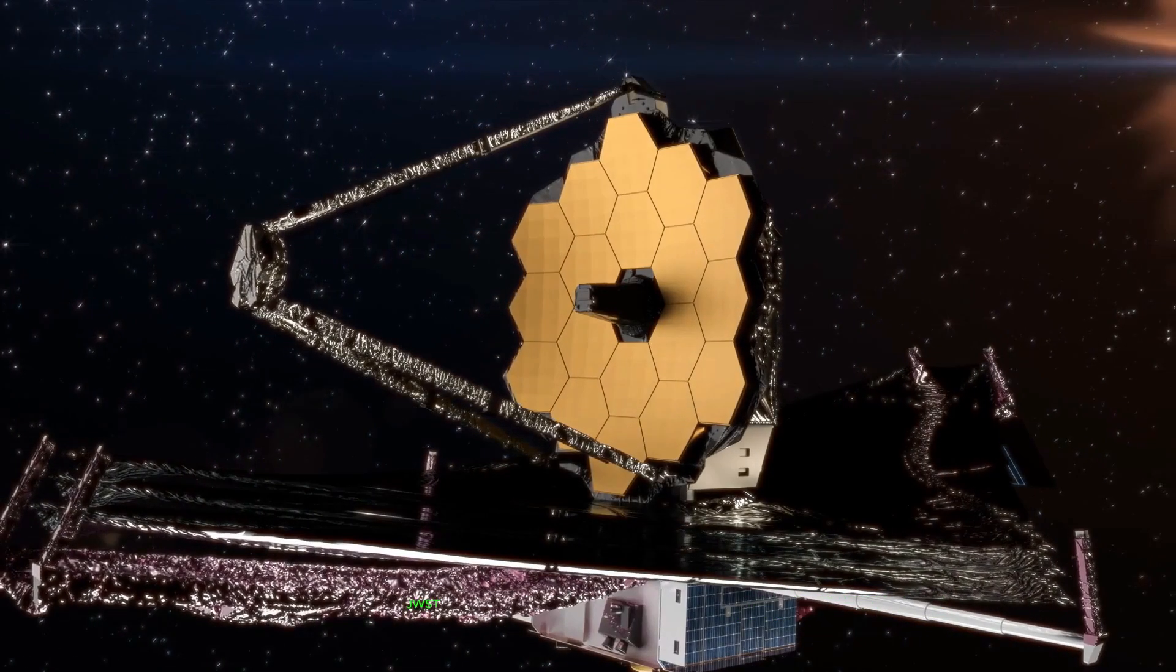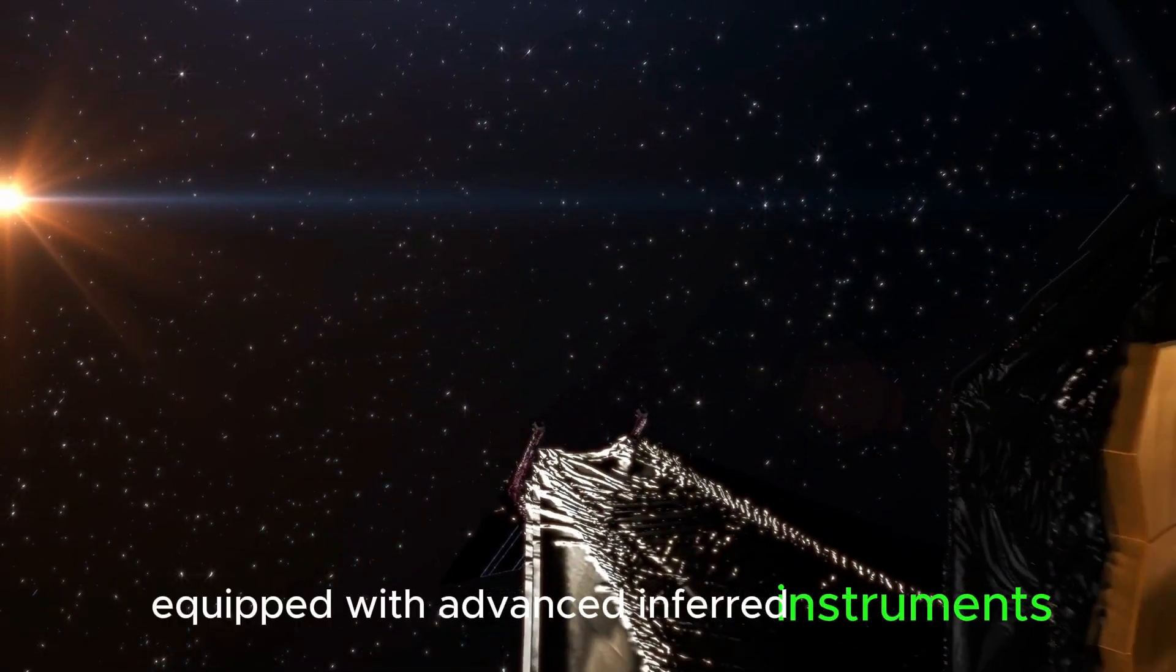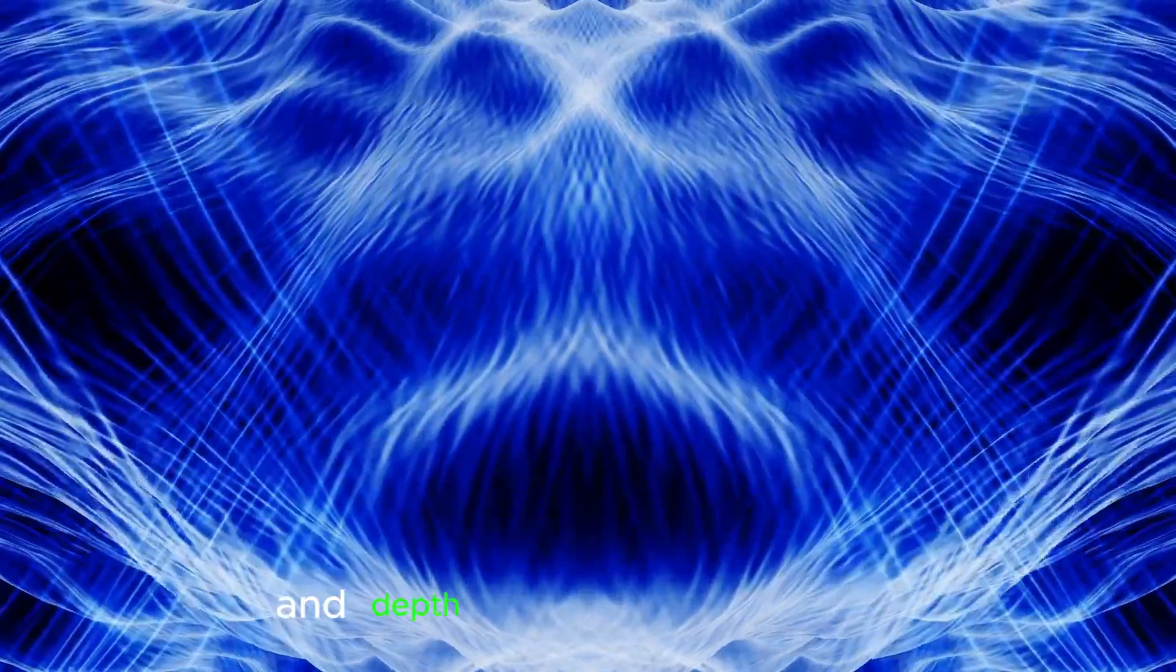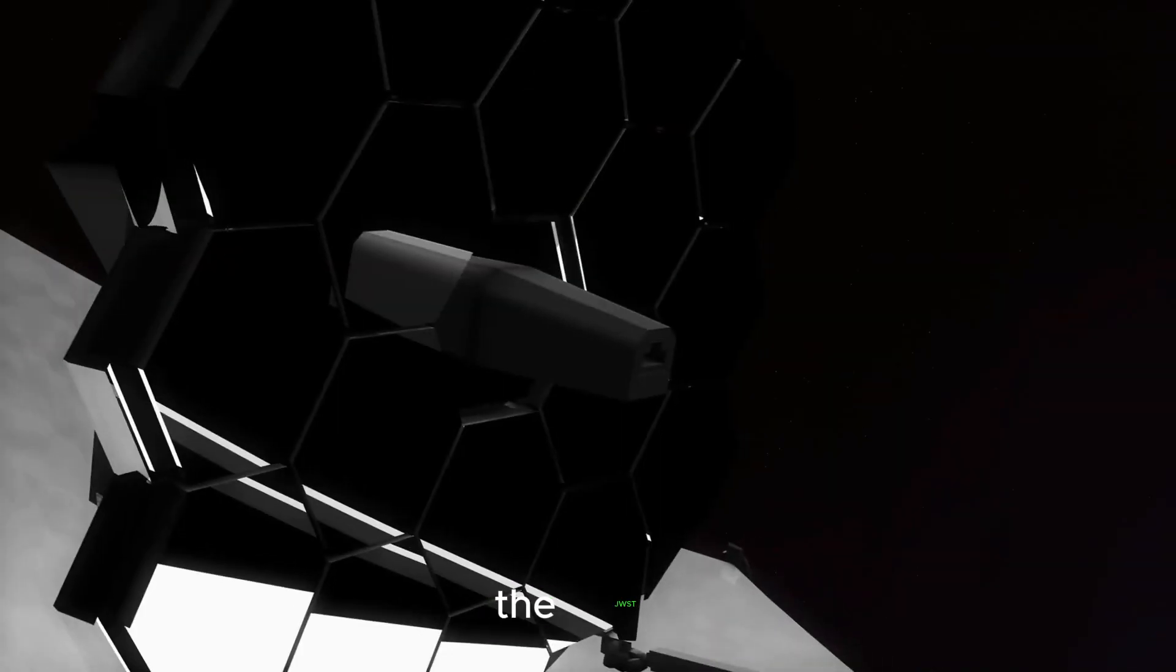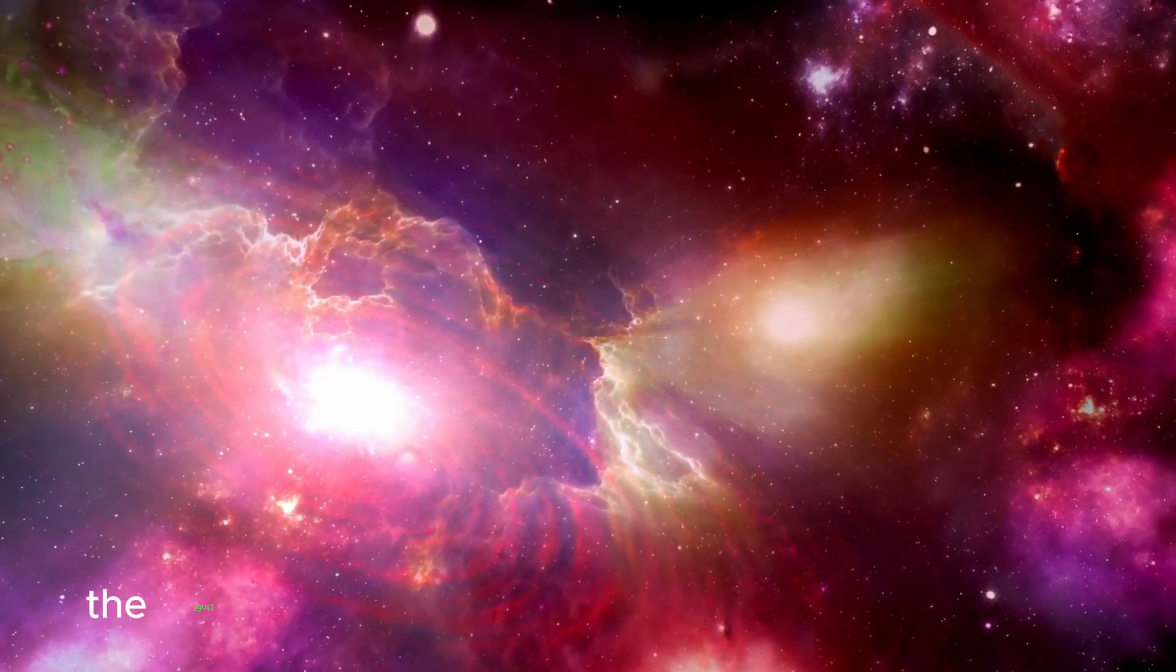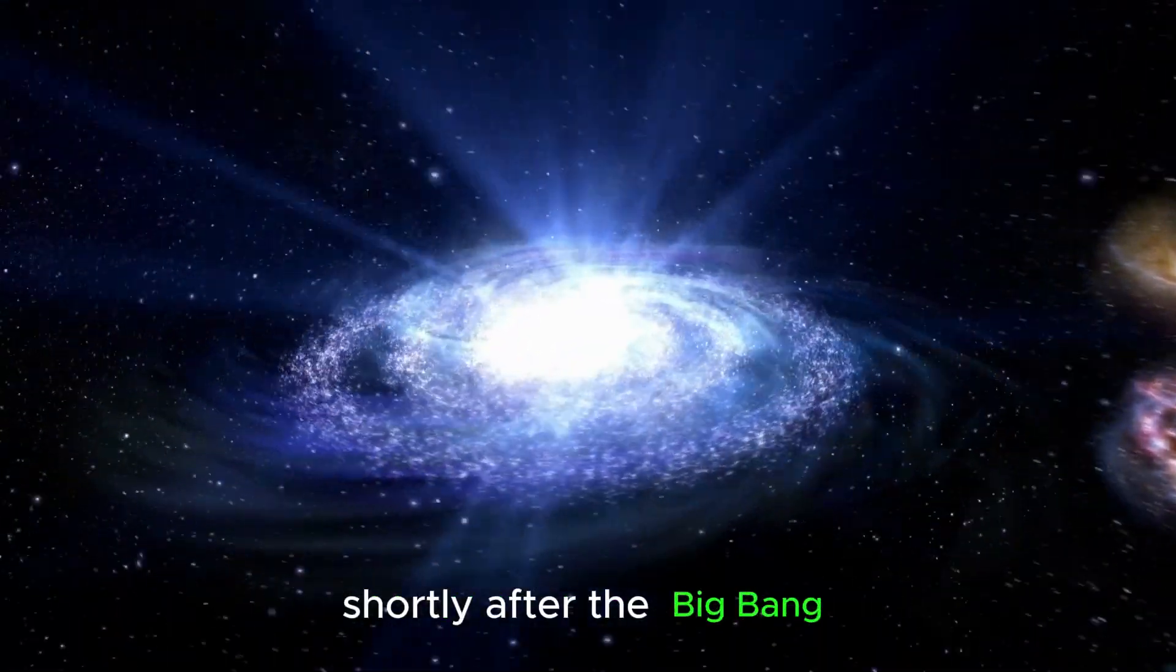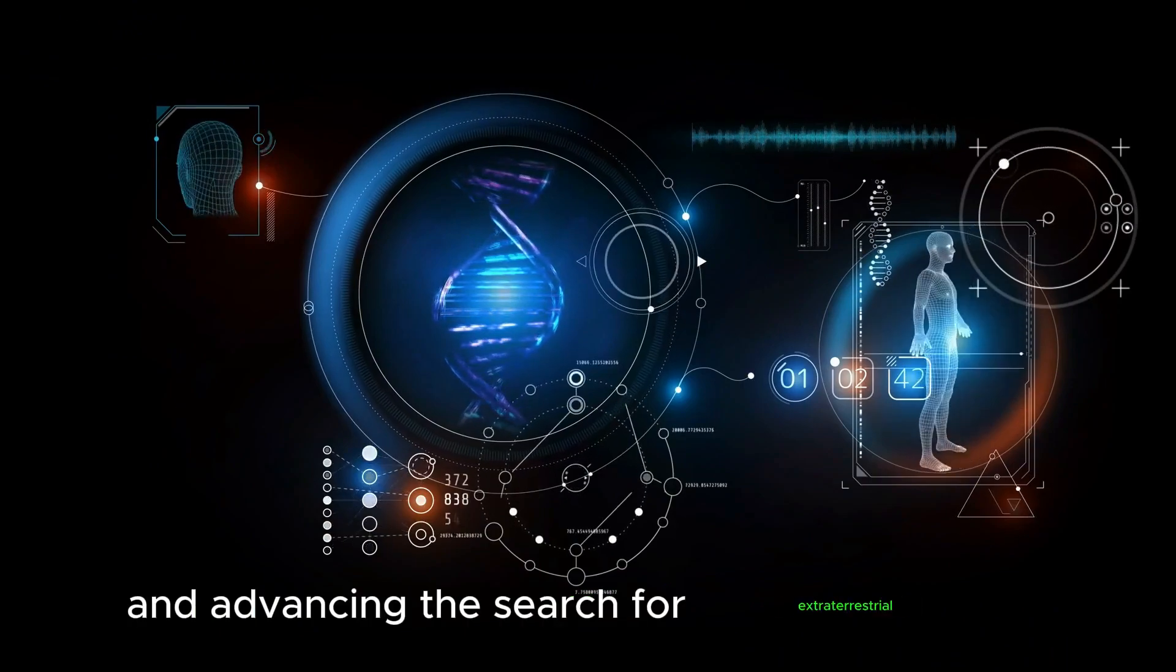The James Webb Space Telescope, JWST, launched in 2021, represents a monumental achievement in both engineering and scientific endeavor. Equipped with advanced infrared instruments, the JWST promises to revolutionize our understanding of the cosmos by exploring the universe in unprecedented detail and depth. Unlike its predecessor, the Hubble Space Telescope, which primarily observes visible and ultraviolet light, the JWST is specifically designed to observe in the infrared, allowing it to unveil cosmic phenomena that have remained shrouded in darkness and mystery. With its keen infrared vision, the JWST can detect the faint glow of distant galaxies, probe the universe's early epochs shortly after the Big Bang, and study exoplanets and their atmospheres, providing crucial data for identifying potentially habitable worlds and advancing the search for extraterrestrial life.